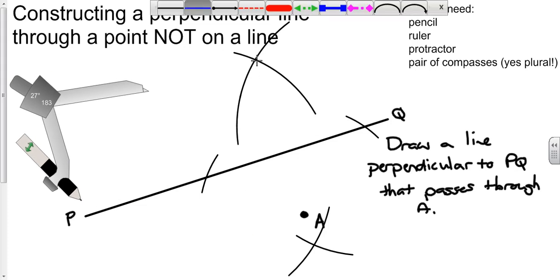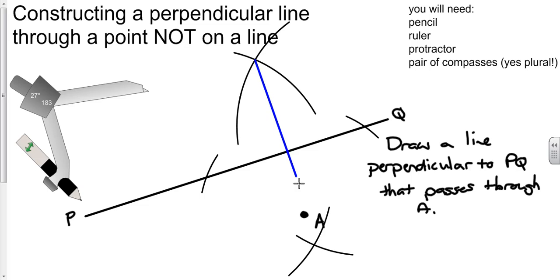And what we get is a line. If I join these two points up, they create a perpendicular line to PQ and they go through A.